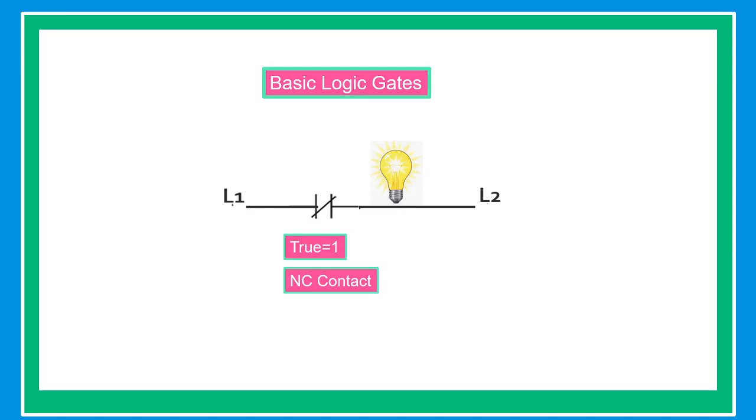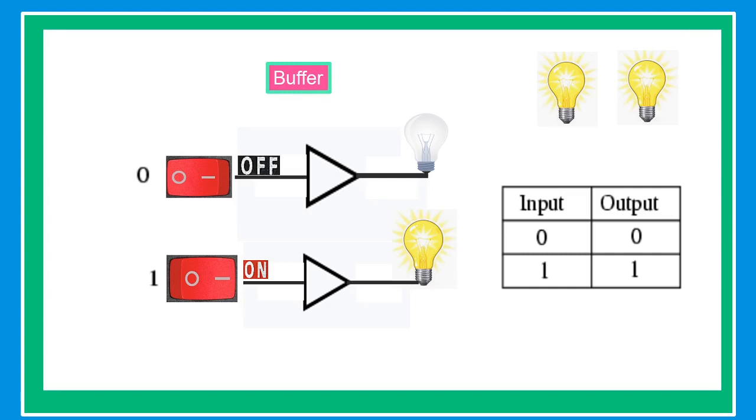In example number 2, the bulb is now glowing because the contact is normally closed, and the current from line 1 can pass through the circuit going to line 2.